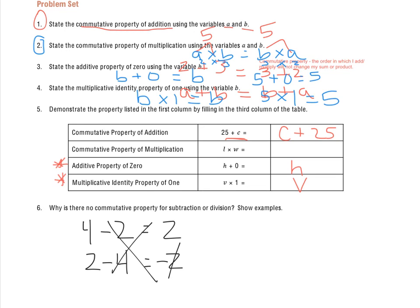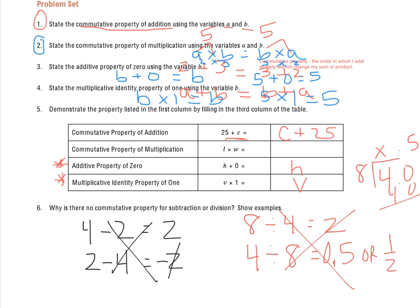Very similar to the division piece. If I have 8 divided by 4, I know that equals 2. If I have 4 divided by 8, that's going to get me something in the decimals or a fraction. So it's going to get me 5 tenths or 0.5 or 1 half. Those don't equal each other, which means there is no commutative property because order does matter for subtraction and division.